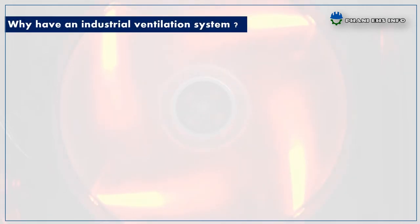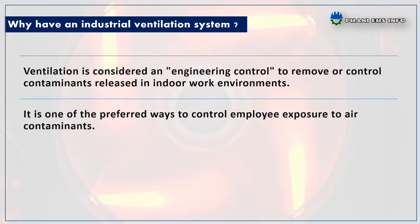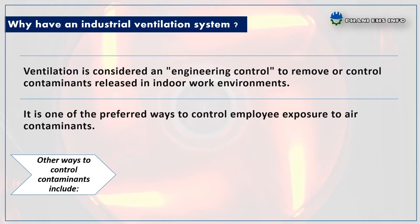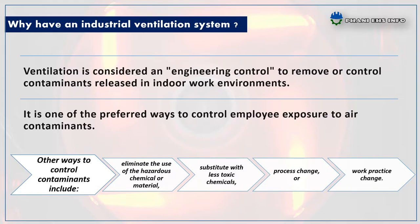Next, why is an industrial ventilation system required? Ventilation is considered an engineering control to remove or control contaminants released in indoor work environments. It is one of the preferred ways to control employee exposure to air contaminants. Other ways to control contaminants include: elimination — eliminating the use of hazardous chemicals or materials; substitution with less toxic chemicals; and process change or work practice change.